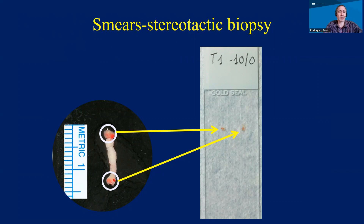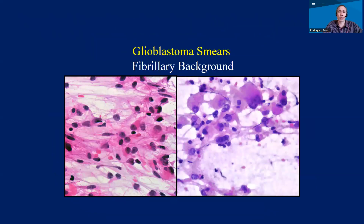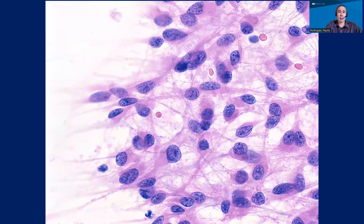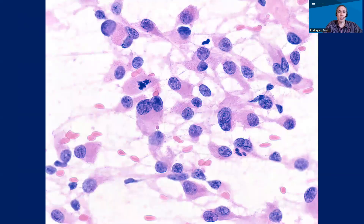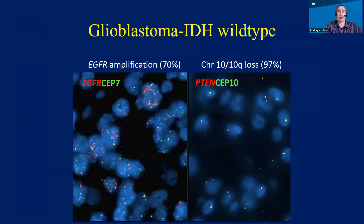Sometimes we have these stereotactic biopsies — very small — but they can provide a lot of information, and we do smears and processing for those. We can look at this while an operation is happening. We often end up evaluating a piece to give the surgeon some preliminary information about what the tumor may be and the general category it belongs to, to help with management. This is what gliomas look like in a cytologic smear — they have all these processes, larger cells, and you can start seeing mitotic activity, which are features we associate with higher-grade tumors like glioblastoma.